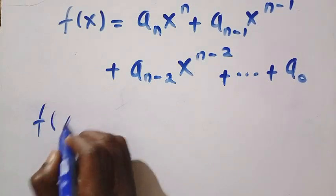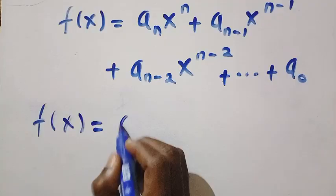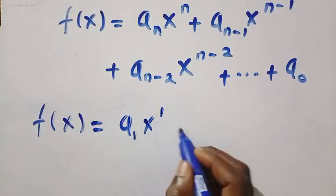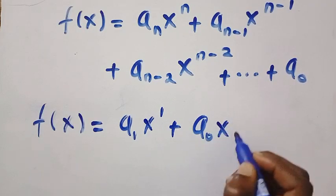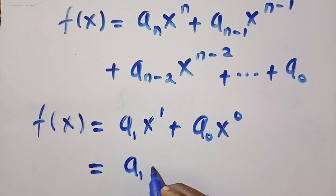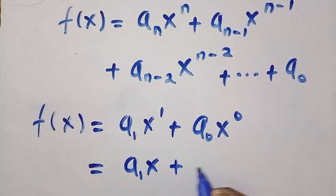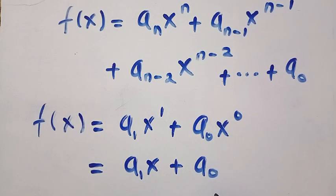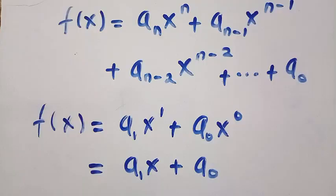Next, we have f of x equals a_1, x raised to the power of 1 plus, the next one will be a_0, x raised to the power of 1 minus 1, which is x raised to the power of 0. Then this equals a_1 x plus a_0, x raised to the power of 0 gives us 1.